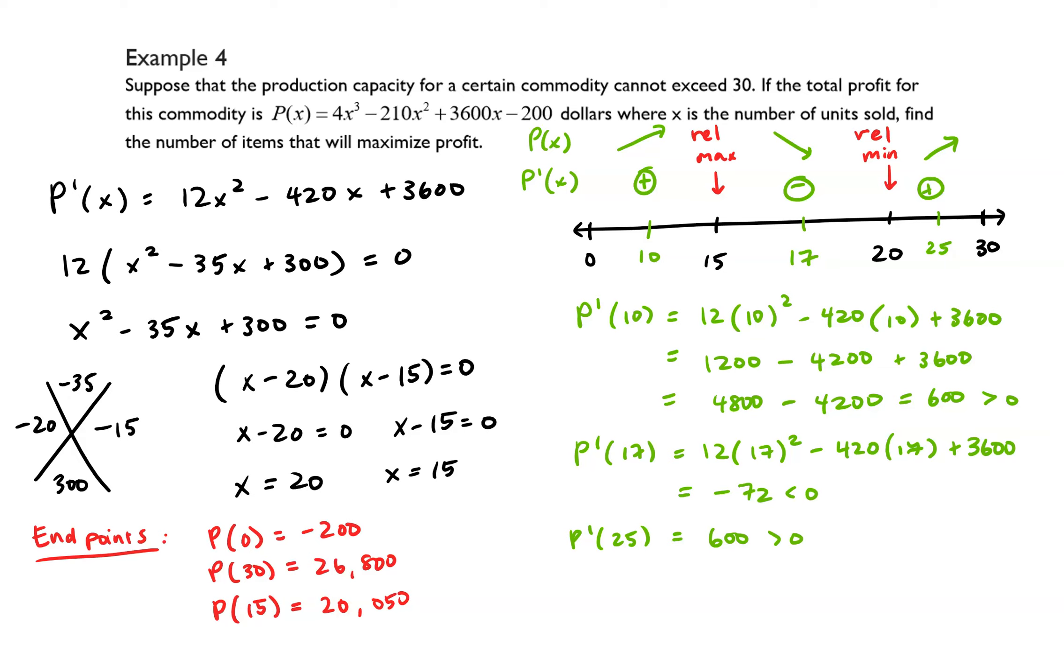So although when x equals 15 we have a relative maximum, the absolute maximum is when x equals 30. So let's ask ourselves what is the original question asking. It says find the number of items that will maximize profit. So selling 30 items will maximize profit, and there is our final answer.